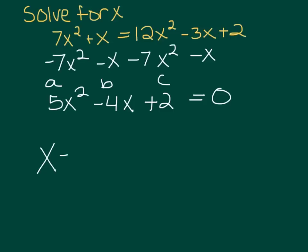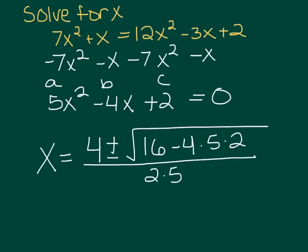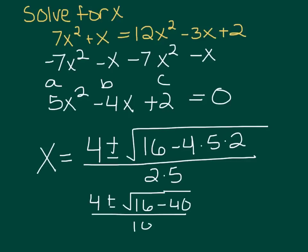So x equals — and if I say negative b and b is already negative, I'm going to take the opposite of b — so 4 plus or minus the square root of b squared, which I'll write as 16, minus 4ac: minus 4 times 5 times 2, all over 2 times 5. That gives me 4 plus or minus the square root of 16, and then 4 times 5 is 20 times 2 is 40, all over 10.